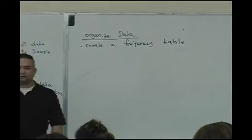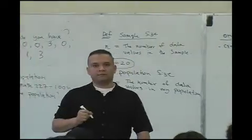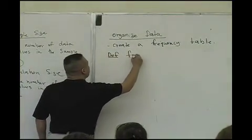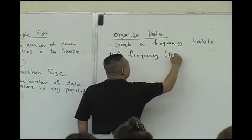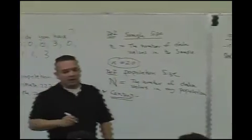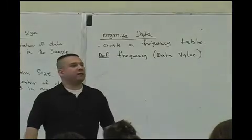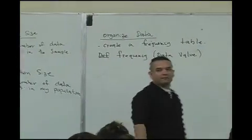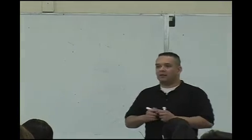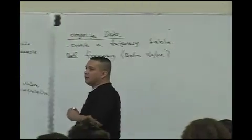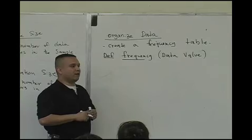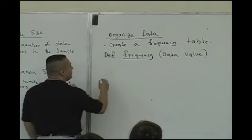And the very first step in organizing data is to create what is known as a frequency table. We're going to create a frequency table. So if you're going to create a frequency table, I guess we need to know the definition of the word frequency. And I'm going to give you what's known as the frequency of a data value. You can actually have various definitions, and they sort of mean the same thing. But what does frequency mean to you? When we see the word frequency, we think of a lot of different things, right? But the definition of frequency in statistics is different than the definition of frequency in other settings.